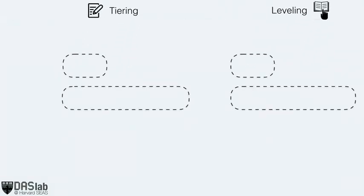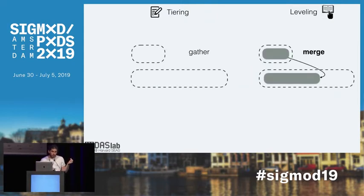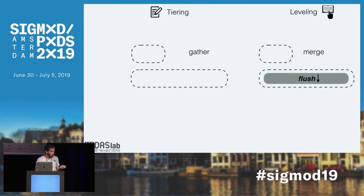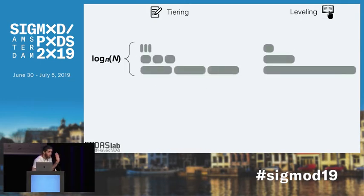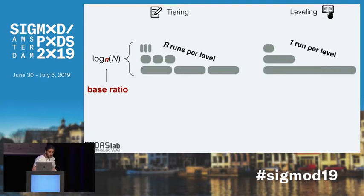With the tiered LSM-Tree, each level gathers a bunch of runs, and when it reaches capacity, it merges them and flushes the resulting run into the next level. With the leveled LSM-Tree, each level performs a merge operation as soon as a new run comes in, flushing to the next level if the resulting run exceeds capacity. With both schemes, we have log(n) runs in the system, where n is the data size and r is the base ratio dictating the capacity ratio between adjacent pairs of levels. With tiering we have r runs per level; with leveling we have just one.